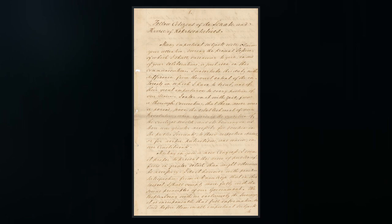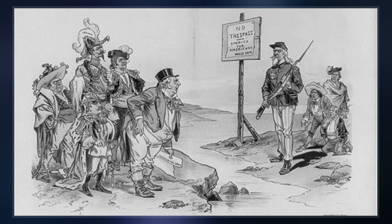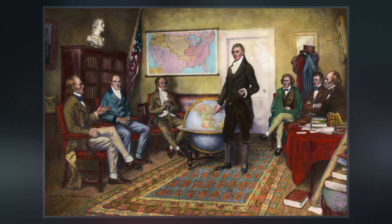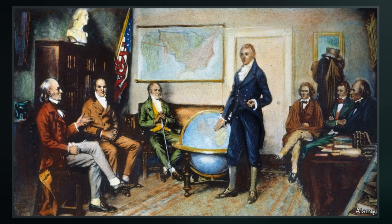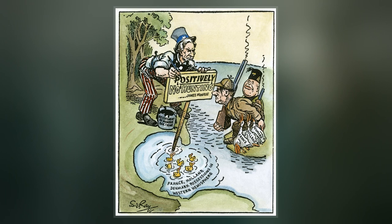President James Monroe first articulated the doctrine on December 2, 1823 during his seventh annual State of the Union Address to Congress. At the time, nearly all Spanish colonies in the Americas had either achieved or were close to independence. Monroe asserted that the New World and the Old World were to remain distinctly separate spheres of influence, and thus further efforts by European powers to control or influence sovereign states in the region would be viewed as a threat to U.S. security.